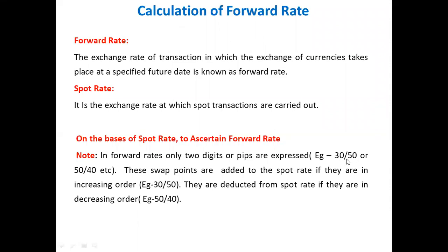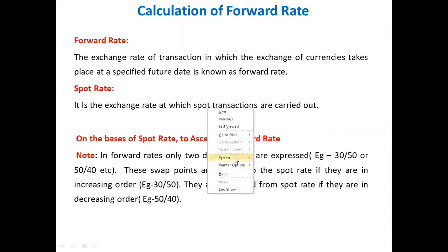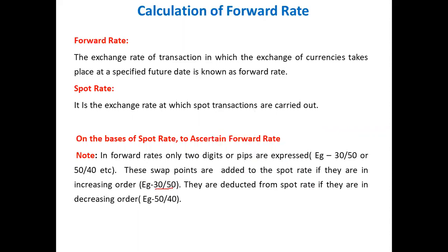Actually, these are expressed as 0.30 and 0.50 — so 0.30 is the bid price and 0.50 is the ask price. These swap points are added to the spot rate if they are in an increasing order. If the values are in increasing order, we add them to the spot rate. If the values are in a decreasing trend, we deduct them.